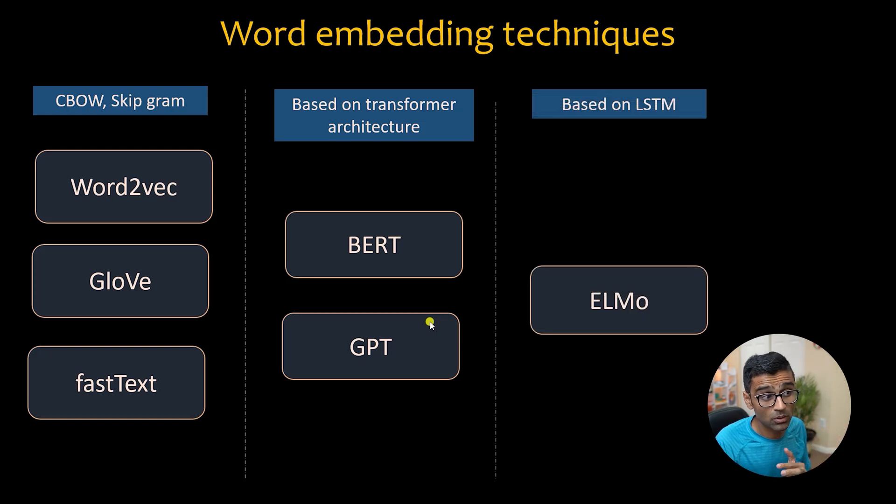There is a technique called ELMO which is based on LSTM. Now what do these techniques do? They convert a word or a sentence into a vector representation so that it can capture the meaning of that word properly. Not only that, you can do arithmetic with the words.